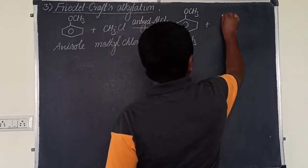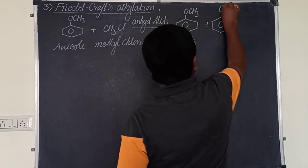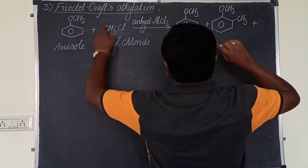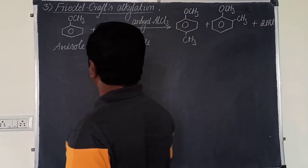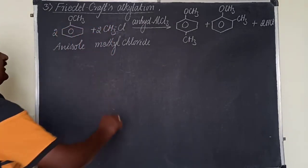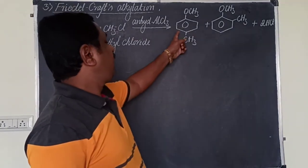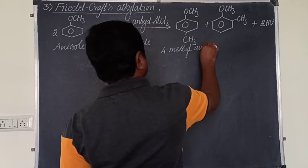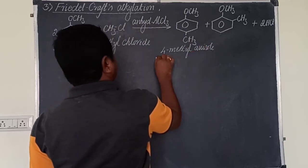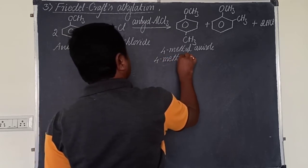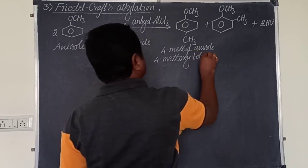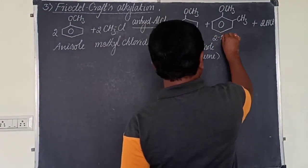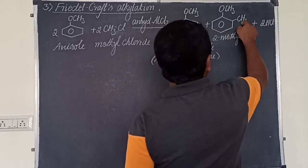The two H+ ions combine with Cl− to give HCl as a byproduct. Balancing requires 2 moles of anisole and 2 moles of methyl chloride. The major product is 4-methyl anisole, also called 4-methoxy toluene. The minor product is 2-methyl anisole, also called 2-methoxy toluene.